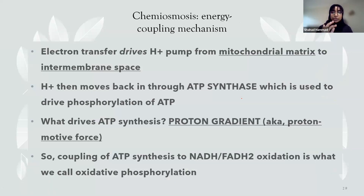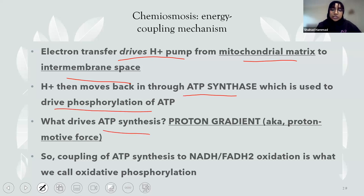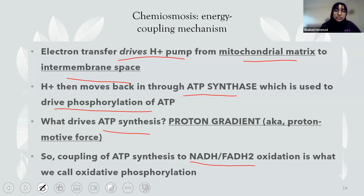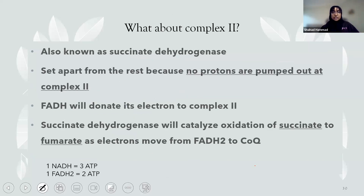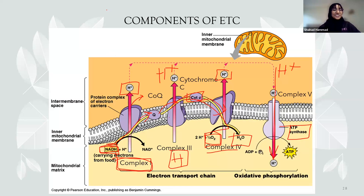In summary: electron transfer drives hydrogen pumping from the mitochondrial matrix into the intermembrane space. Then hydrogen moves back in through ATP synthase, driving phosphorylation. What drives ATP synthesis is the proton gradient — hydrogen ions are at higher concentration in the intermembrane space than in the mitochondrial matrix. The coupling of ATP synthesis to NADH oxidation is called oxidative phosphorylation.